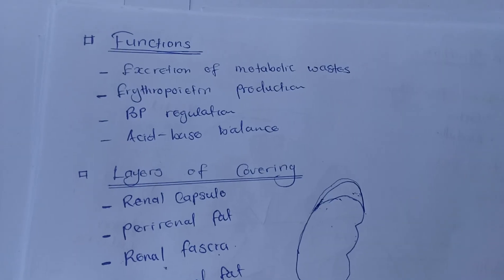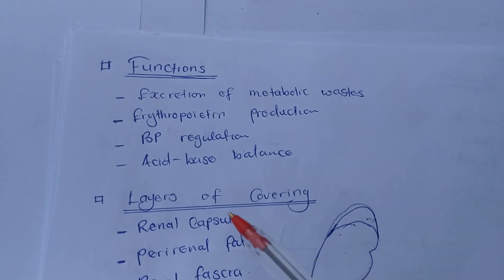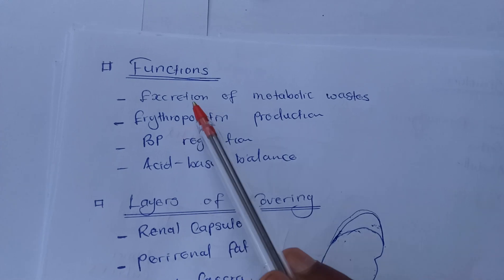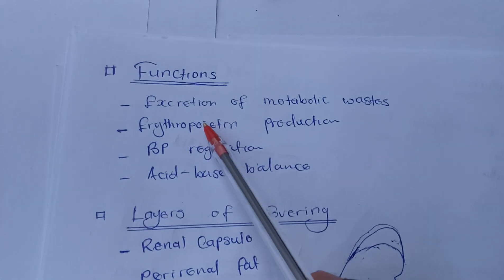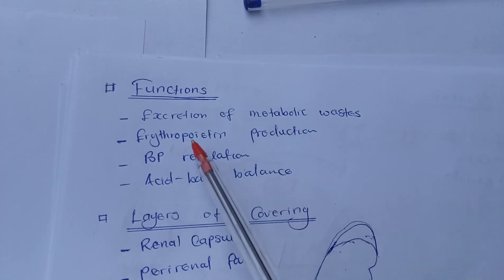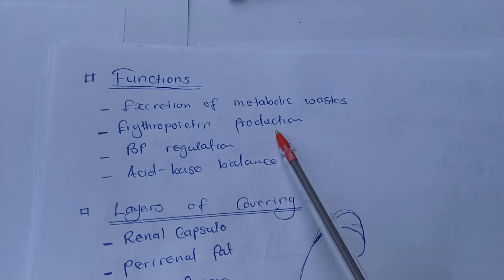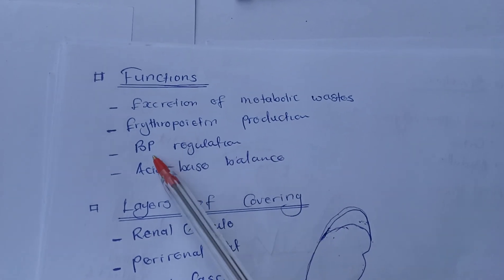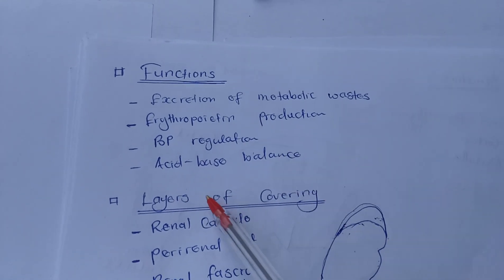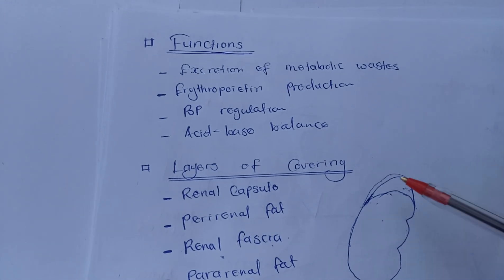What are the functions of the kidneys? The kidneys work to excrete metabolic wastes. They also take part in erythropoietin production, blood pressure regulation, and acid-base balance. These are the functions of the kidneys you can write in your essay or exam.